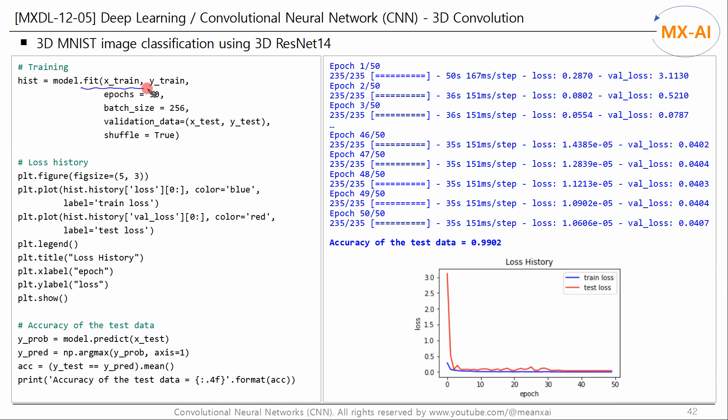Fit this model to the training data. The batch size is set to 256 and the number of iterations is set to 50. Next, let's check the loss history. Finally, measure the accuracy of the test data.